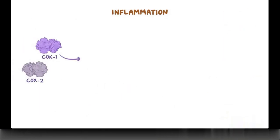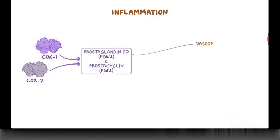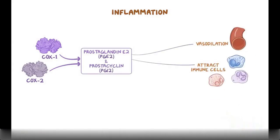Both enzymes produce prostaglandin E2, or PGE2, and prostacyclin, or PGI2, which cause vasodilation and attract different immune cells to the area.